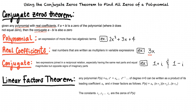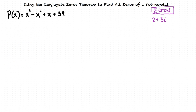How can we use the conjugate zeros theorem to find all the other zeros of an expression? Let's demonstrate this by working through an example problem together. We are given the equation p of x equals x to the third power minus x squared plus x plus 39, and that 2 plus 3i is a zero. We are asked to find all other zeros.